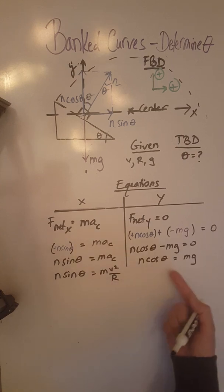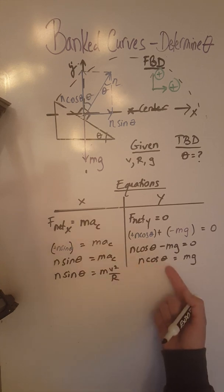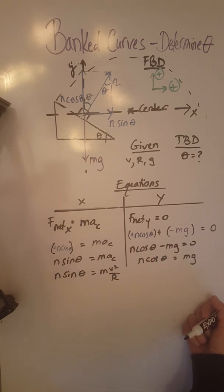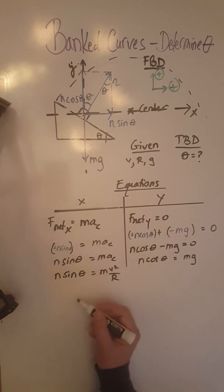So I will solve these two equations, this system of two equations, by dividing the left hand sides and the right hand sides, because I see that if I do that, n will cancel out and m will cancel out. So let's go ahead and do that.